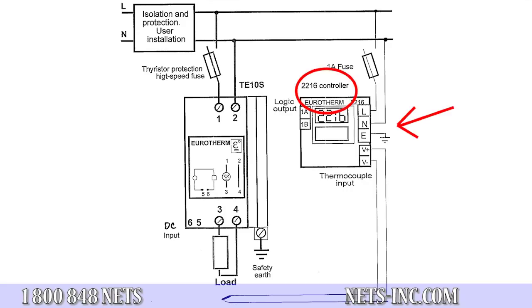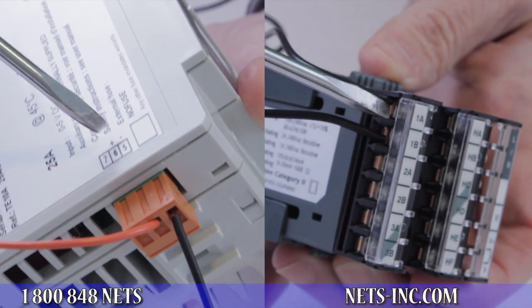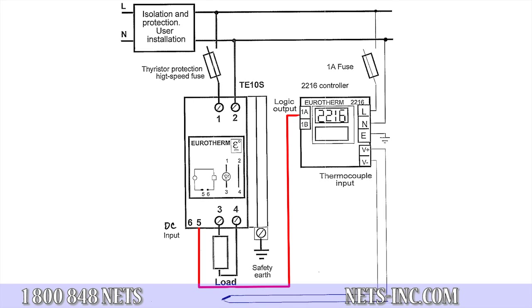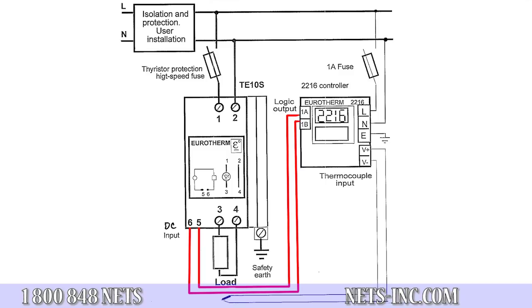In the wiring diagram shown, we are using a Eurotherm 2216E temperature controller and a Eurotherm TE10S power controller with a DC logic input command signal. First, wire terminal 1A positive of the temperature controller to terminal 5 positive of the power controller. Next, wire terminal 1B negative of the temperature controller to terminal 6 negative of the power controller. This completes the output wiring for this style of control. Now when the temperature controller turns on or off, the DC logic output produces a 12 volt DC signal to the input command of the power controller, and the power controller will turn on to allow current flow to the heating element.